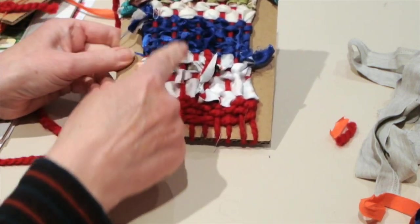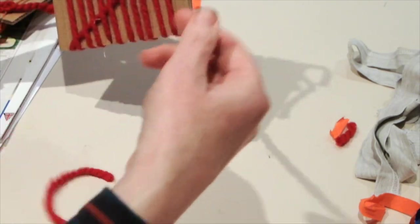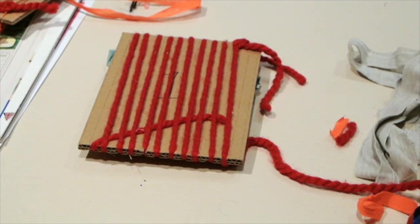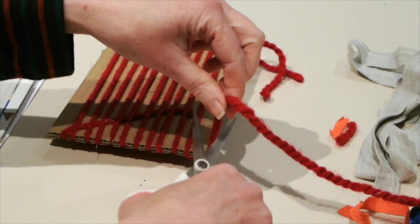Now I need to remove my weaving off of my board. To do this, I'm just going to flip it over. Then getting my scissors, I'm going to trim that end of wool off.